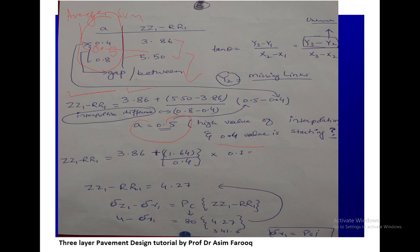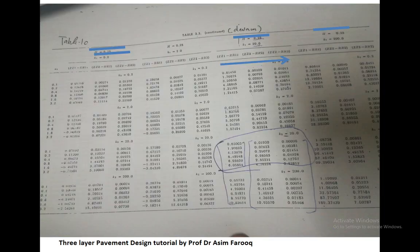From the formula sigma Z1 minus sigma R1 equals PC times (ZZ1 minus RR1), with all parameters now known — wheel load 80 psi, ZZ1 minus RR1 equals 4.27, and sigma Z1 equals 4 psi — we can determine sigma R1 directly. We will repeat the same technique for ZZ2 minus RR2 and ZZ3 minus RR3 at subsequent interfaces. If the exact value of A is not available in the figure, we repeat the interpolation method to find the missing link.